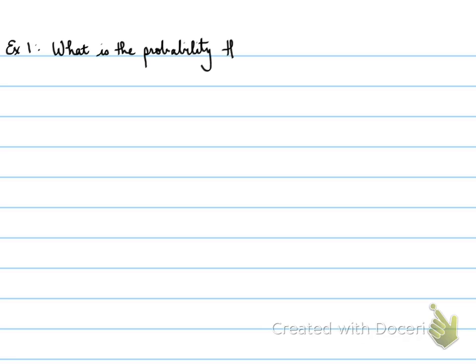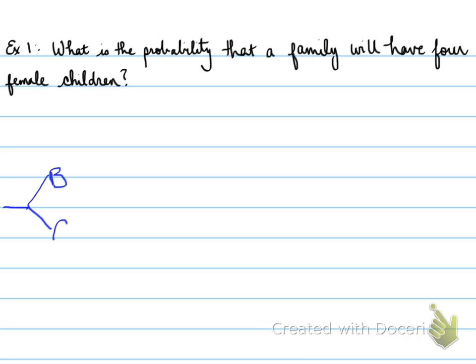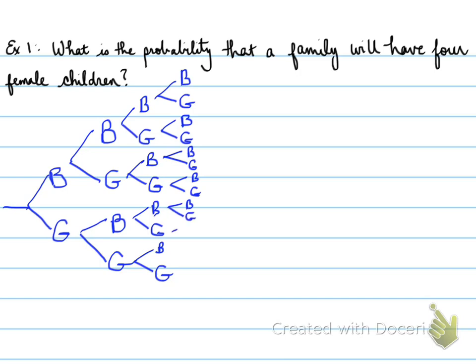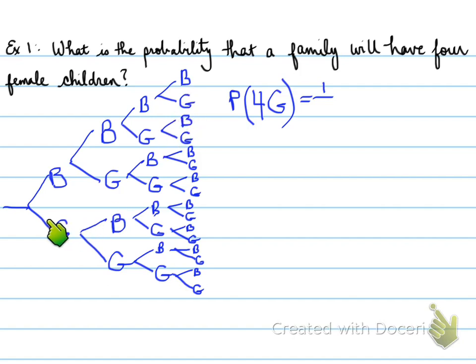Example number one: what is the probability that a family will have four female children? Using a tree diagram, the first child is boy or girl, the second child is boy or girl, the third child is boy or girl, and finally the fourth child is boy or girl. This tree diagram allows us to calculate the probability of having four girl children.